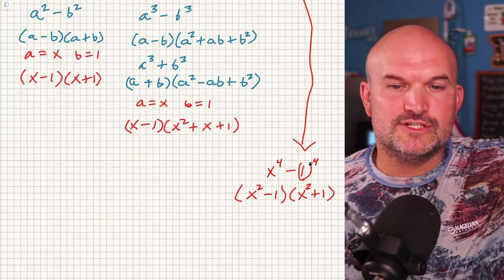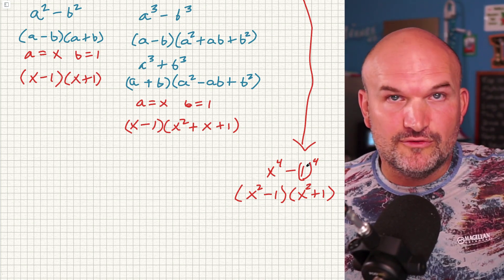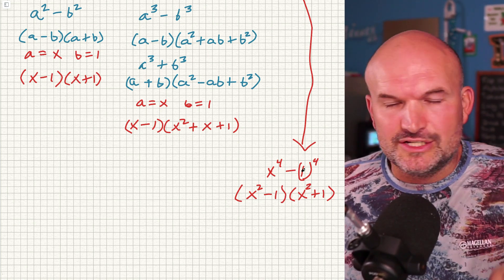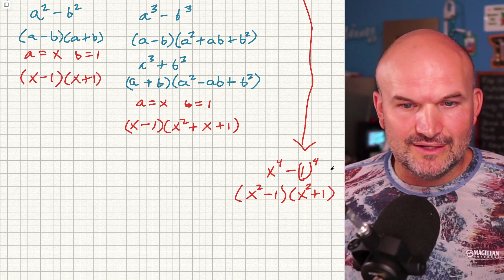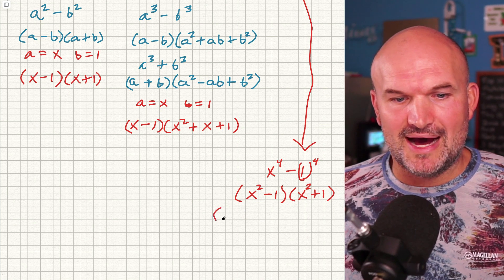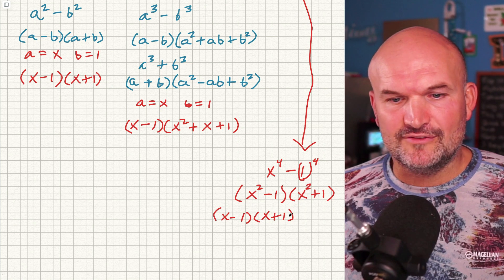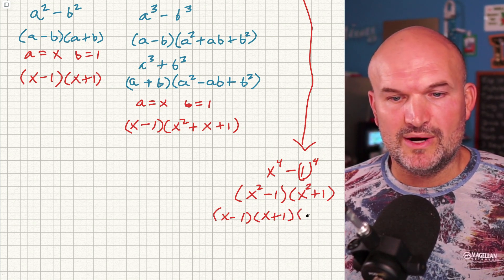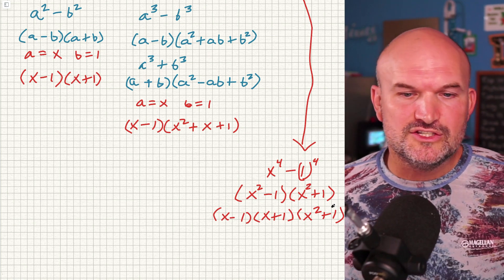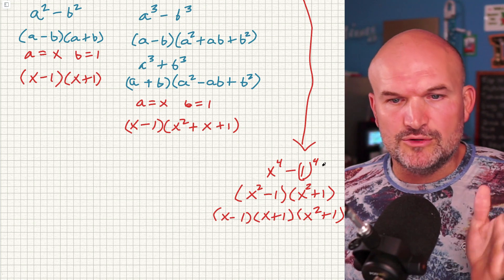I rewrote this in terms of fourth powers so you can see that 1 to the fourth power is just 1, and negative 1 times positive 1 gives back that negative 1. What's cool is I've now created another difference of two squares — x squared minus 1 — which I can factor further as x minus 1 times x plus 1. But I can't continue factoring the sum of two squares, x squared plus 1, at least across the real number system. So what if I needed to factor down to linear factors, or solve this set equal to zero?